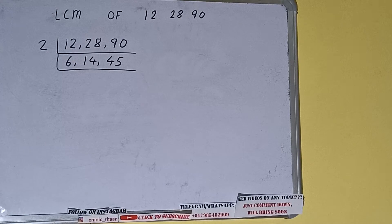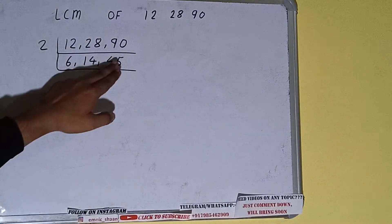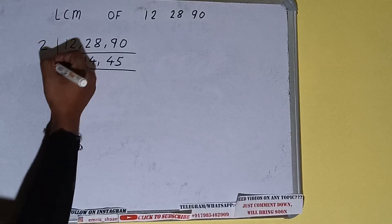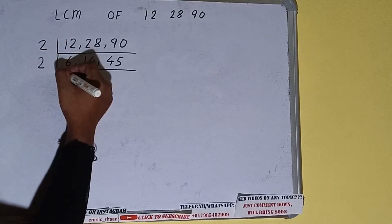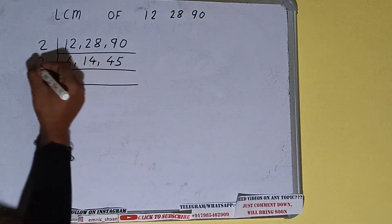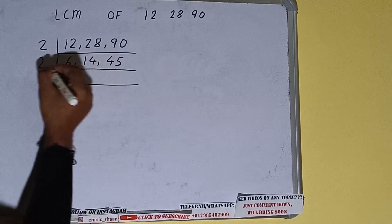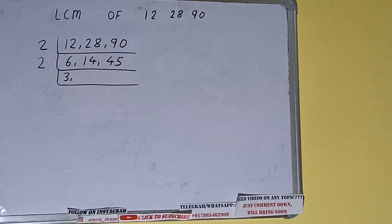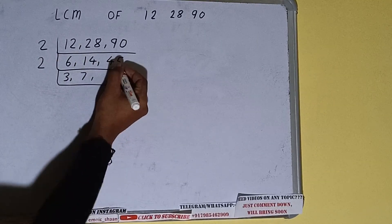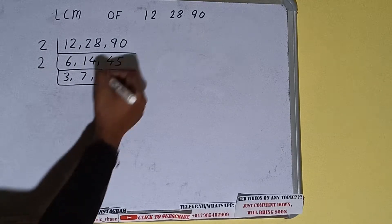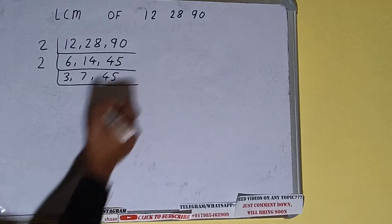So we'll divide only the first and second number, and the third number we'll just copy it down. We write 2 here: 6 divided by 2 becomes 3, 14 divided by 2 becomes 7, and 45 is not divisible by 2 so we just copy it down.